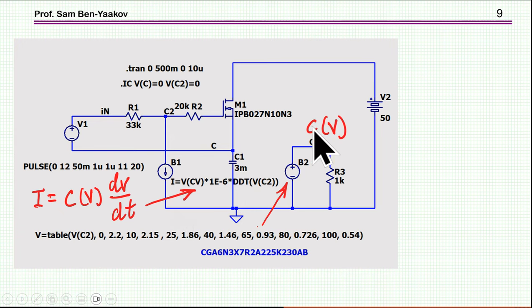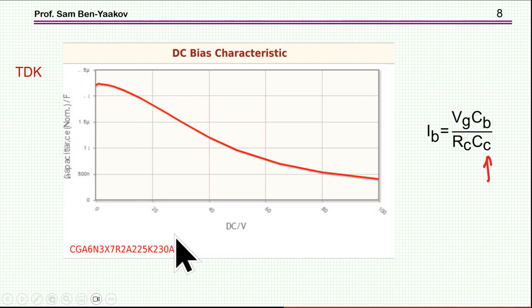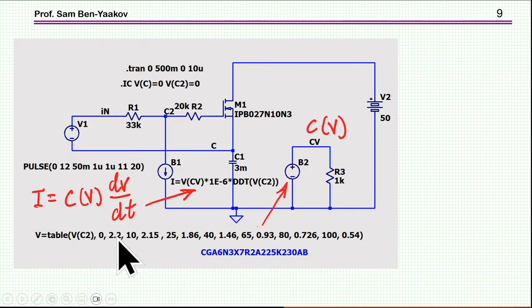Now, the voltage which represents the capacitance is actually generated by a table, which is the dots here, that I've sort of put down here in a table. So this is the voltage, and each pair here is the voltage and capacitance, voltage and capacitance.